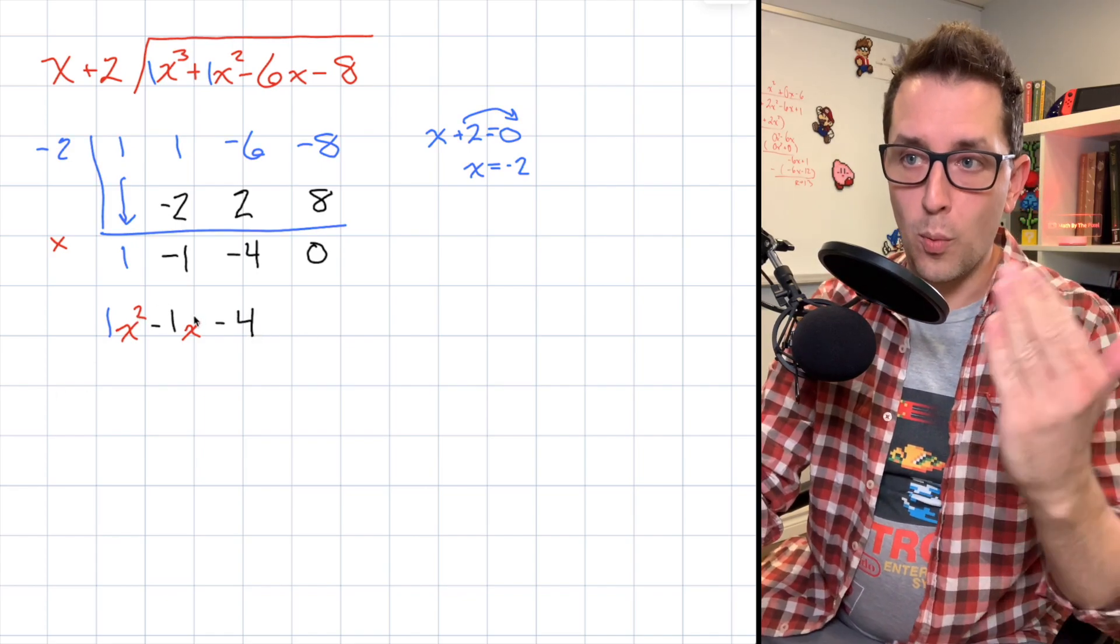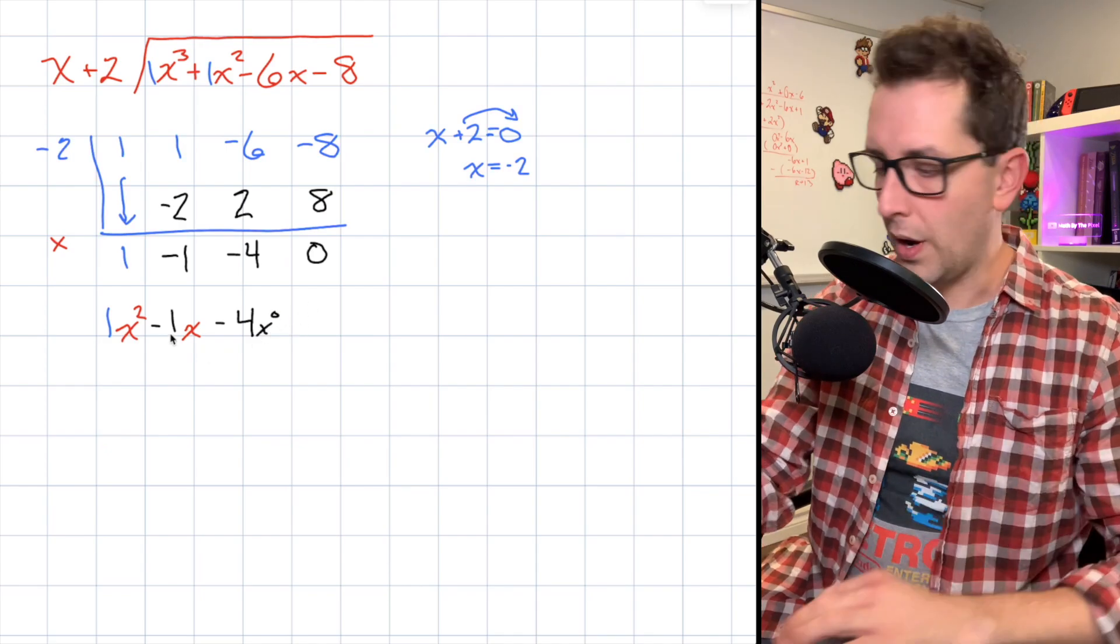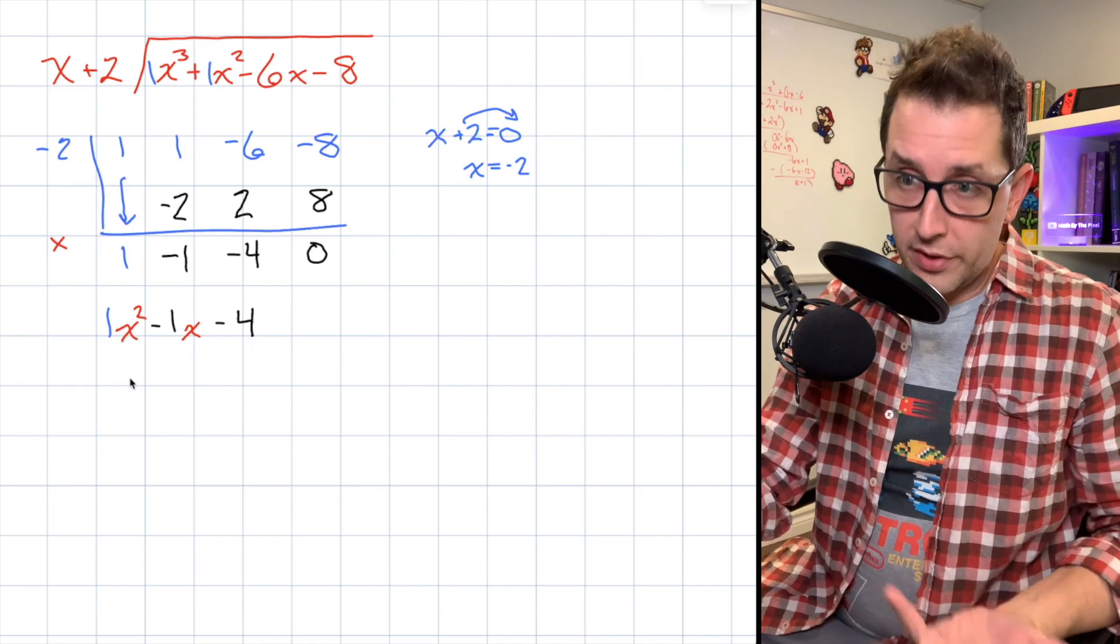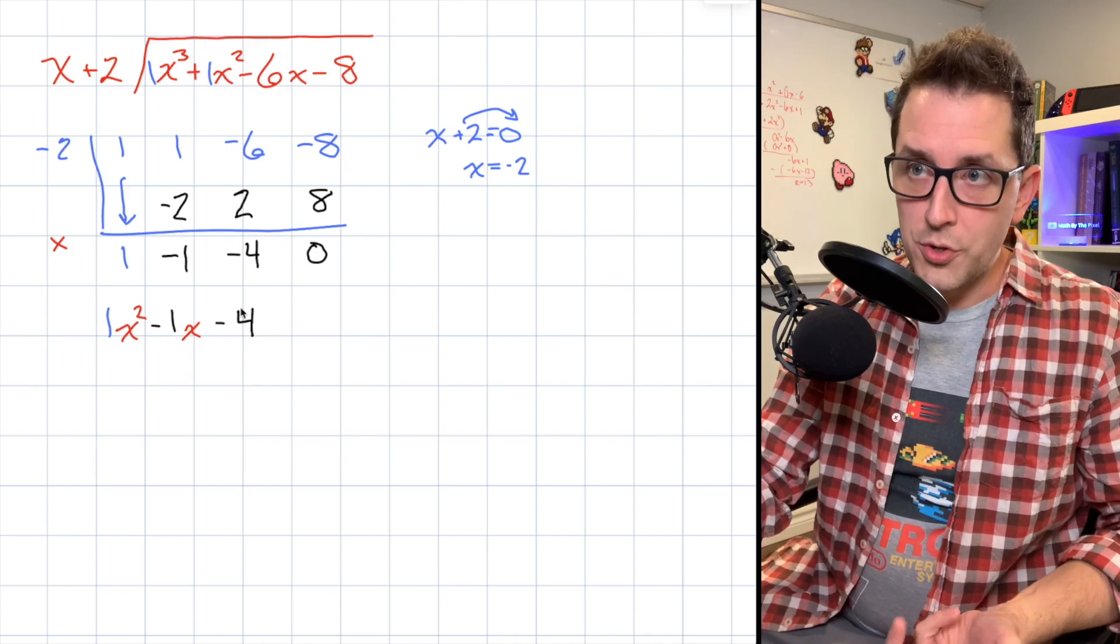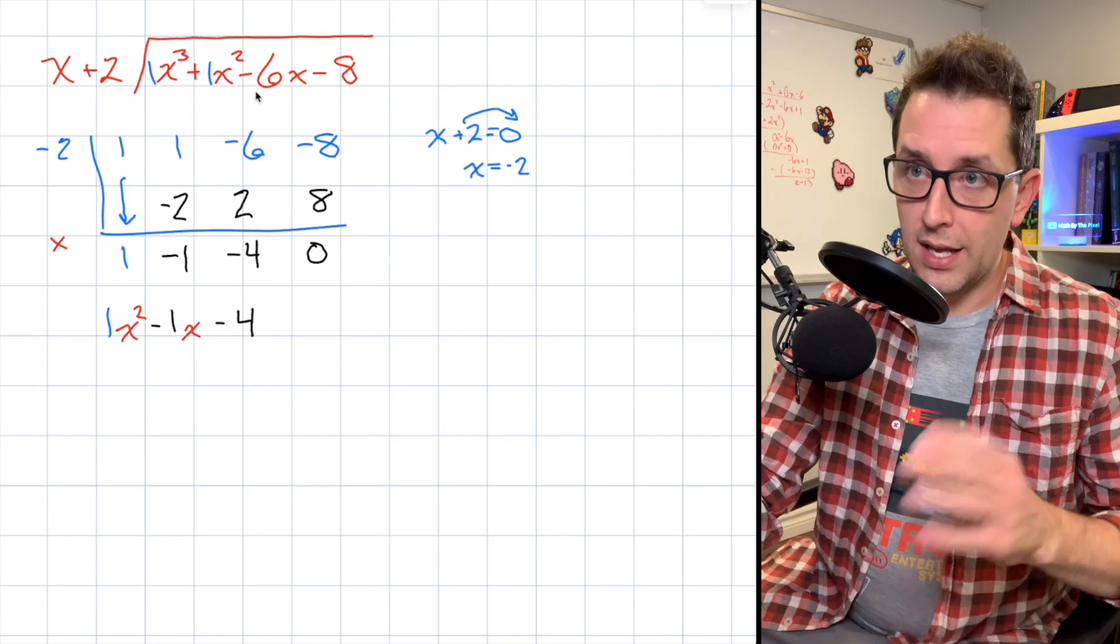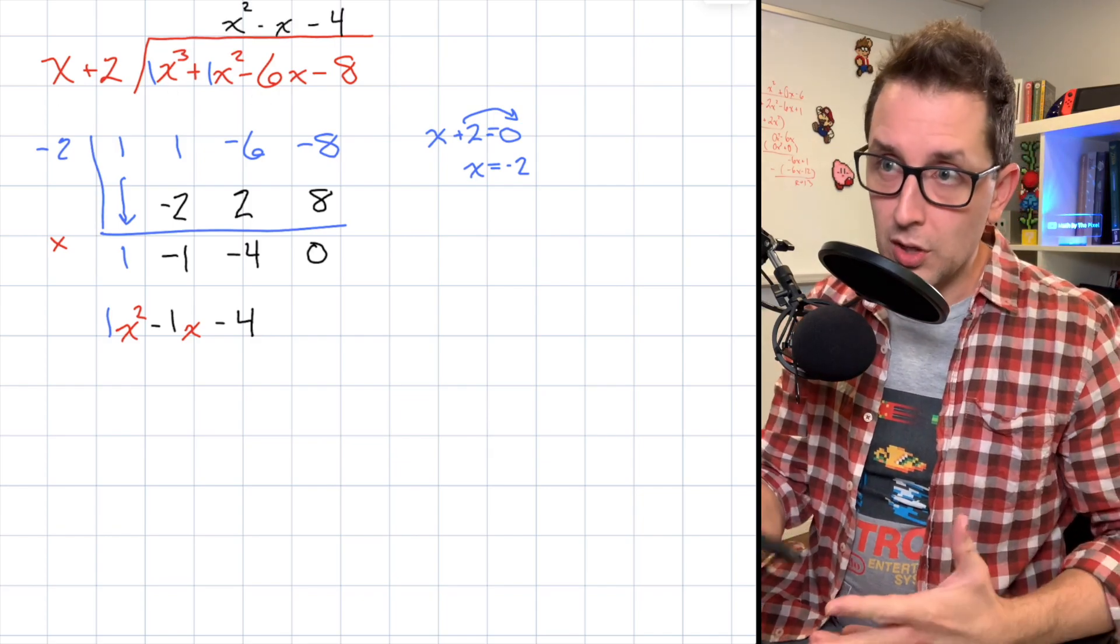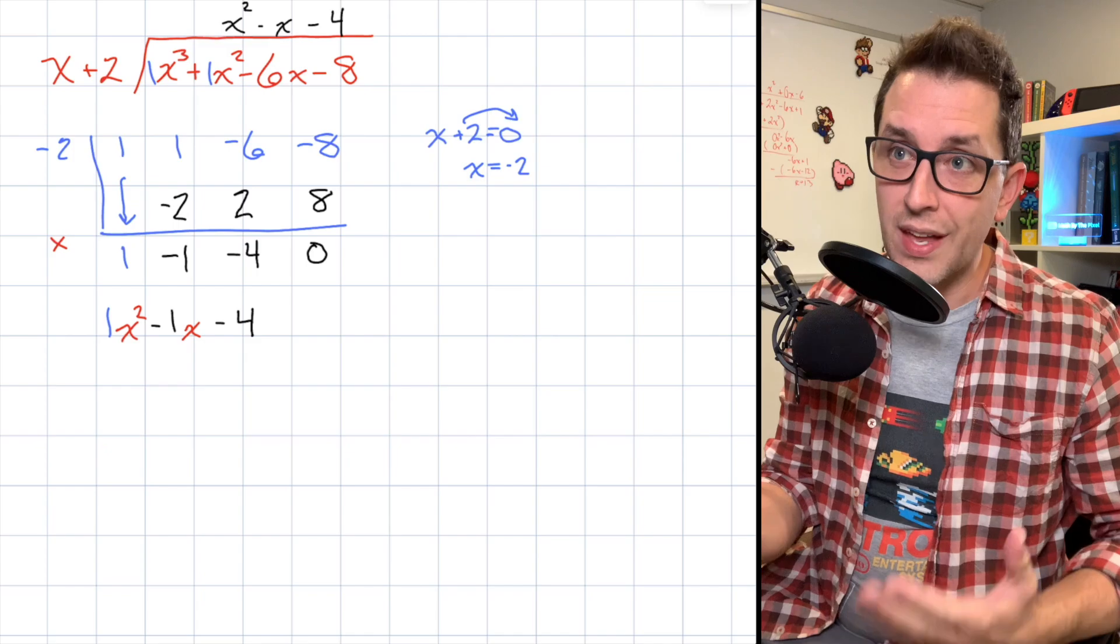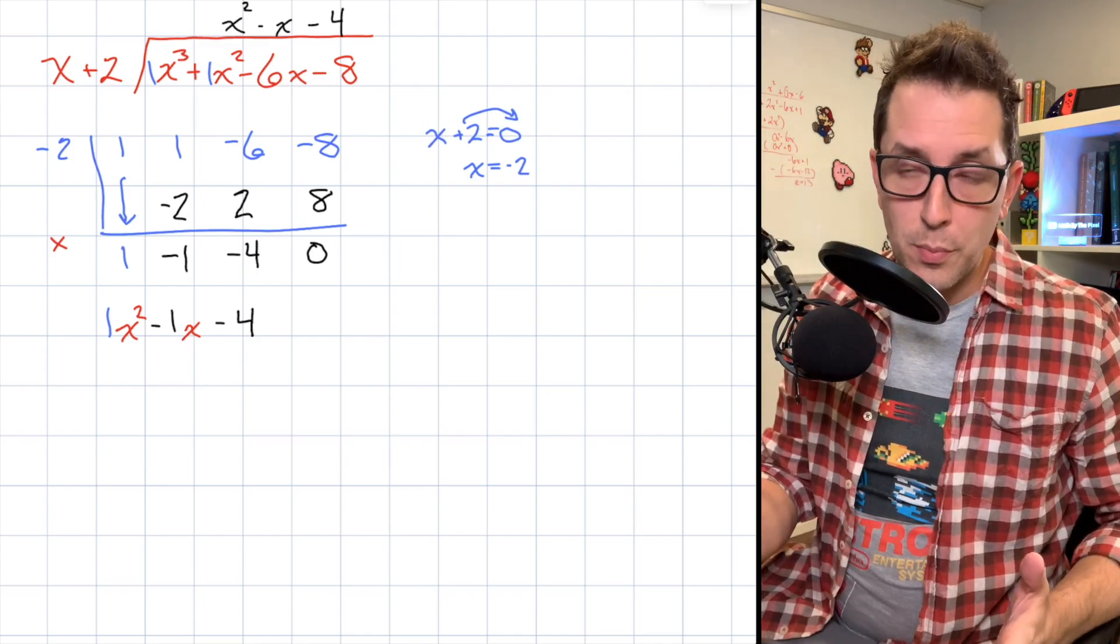And now it should be no surprise that this -4 is going to be the last term in our quotient. If we decrease in power by 1 each time, we end up with like a little imaginary x⁰ here, but I'm not going to write that just to keep things clean. So you can see that I ended up with a trinomial of degree 2, and that is going to be the quotient that I get when I take that dividend and divide by that divisor. So I've just cleaned things up and placed that on top of our long division problem to show you that that's the quotient that I get when I divide that polynomial by that binomial. That's the synthetic division process.